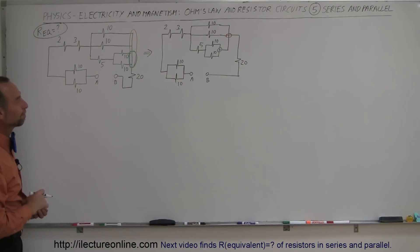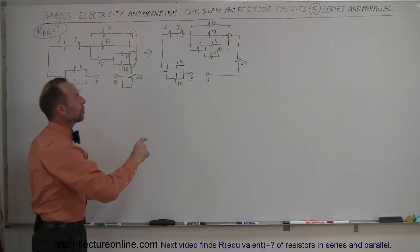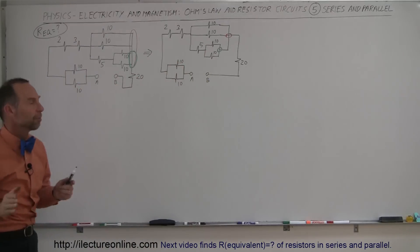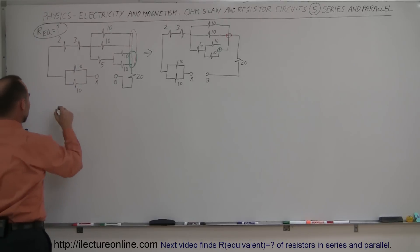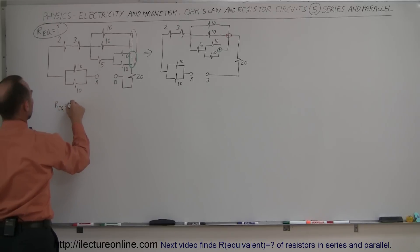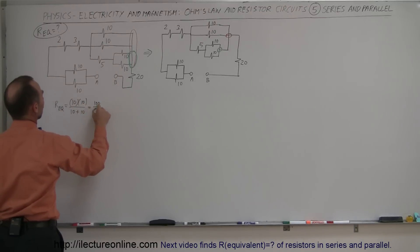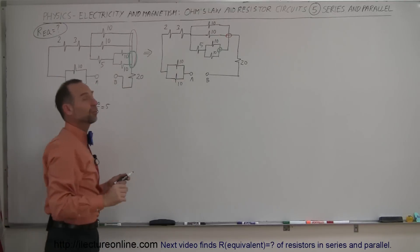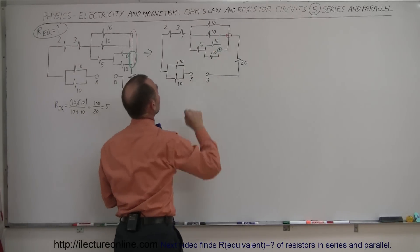So, how do we begin to simplify that? I have a parallel branch right here I can combine, and a parallel branch right there I can combine. Notice they're both the same resistance — 10 ohms and 10 ohms, and 10 ohms and 10 ohms. If you have two resistors in parallel with the same value, the equivalent resistance will be half that value. R-equivalent equals the product over the sum: 100 over 20, which is 5. So each pair becomes a 5 ohm resistor.